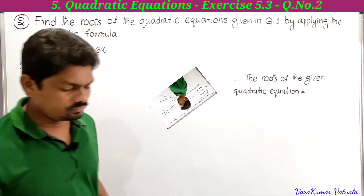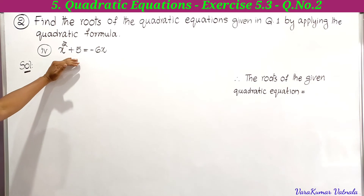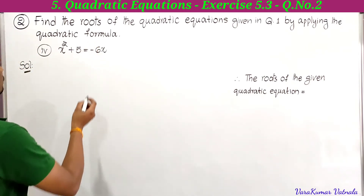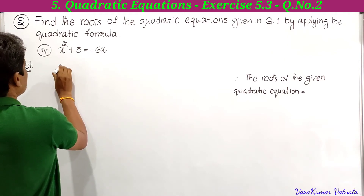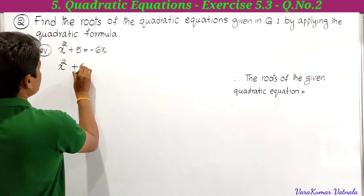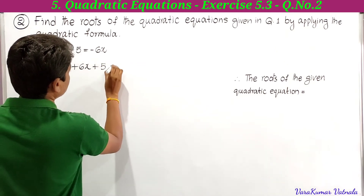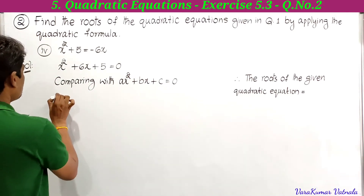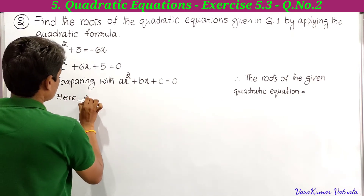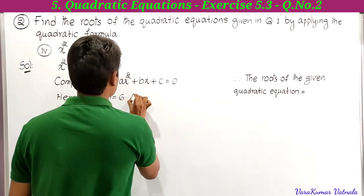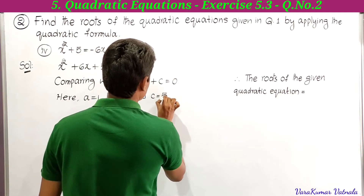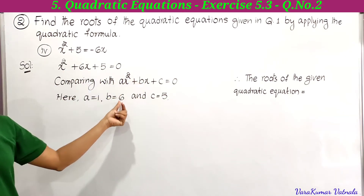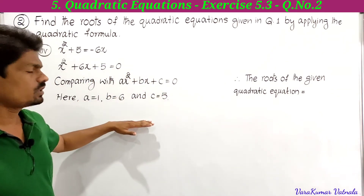Fourth part: x² + 5 = −6x. We rearrange by moving −6x to the left side, writing in order: x² + 6x + 5 = 0. Comparing with ax² + bx + c = 0: a = 1, b = 6, c = 5.